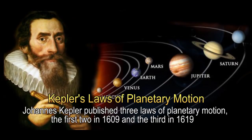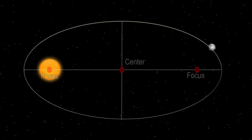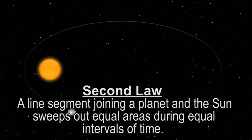Kepler used his laws to describe the motion of planets around the sun as perfectly elliptical. Experimentally measured data shows that the planet, if only slightly, deviates from its elliptical path.